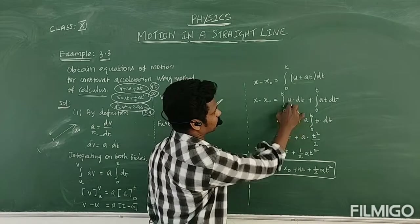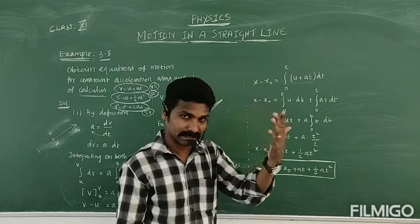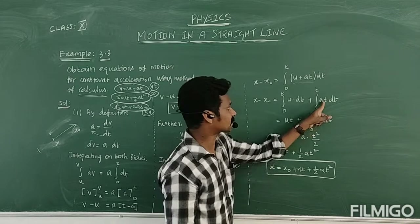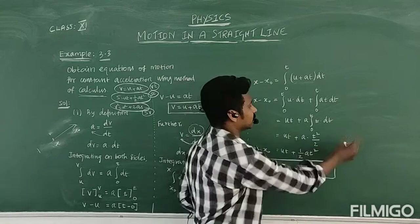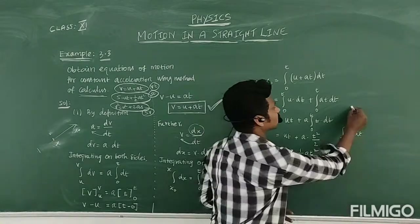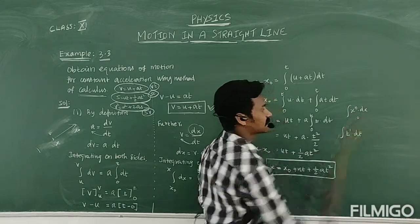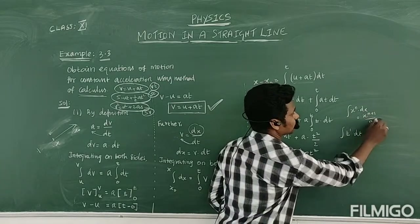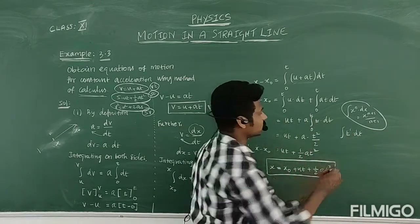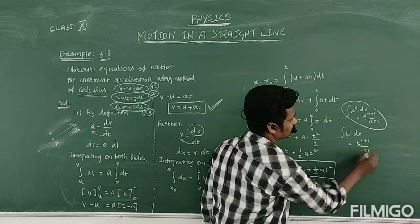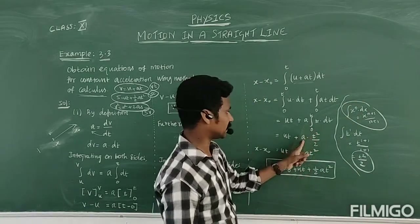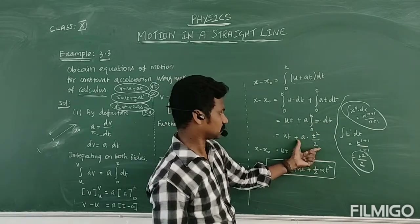For the first term: U is constant, so integral of DT from 0 to T gives T, making the first term U times T. For the second term: acceleration A is constant and taken outside, leaving integral of T¹·DT. Using the formula — integral of xⁿ dx equals x^(n+1)/(n+1) — we get T squared divided by 2. So this term is half A T squared.